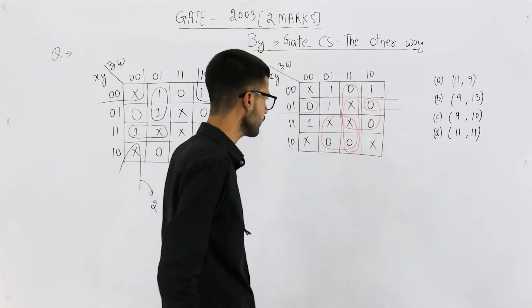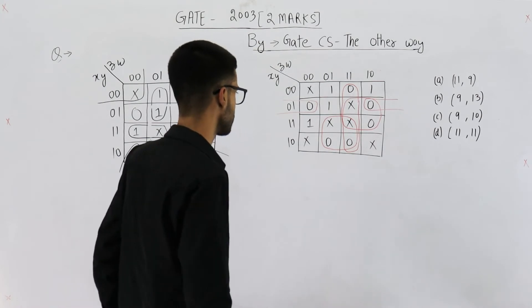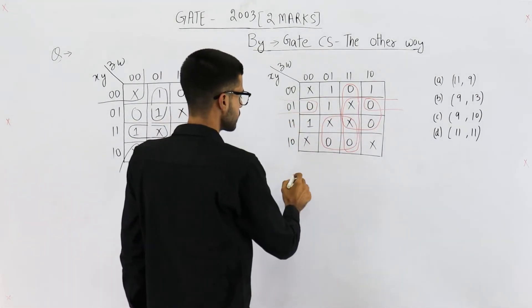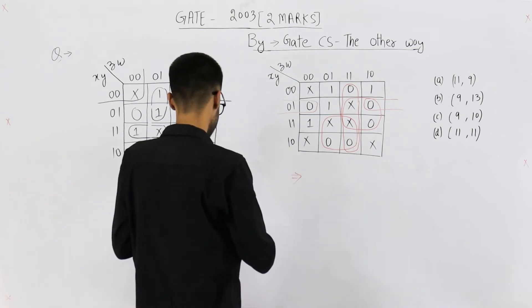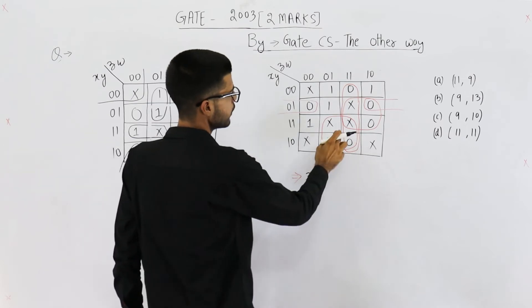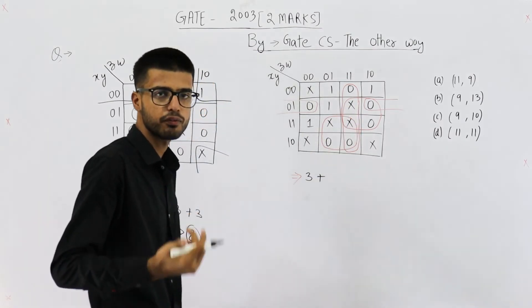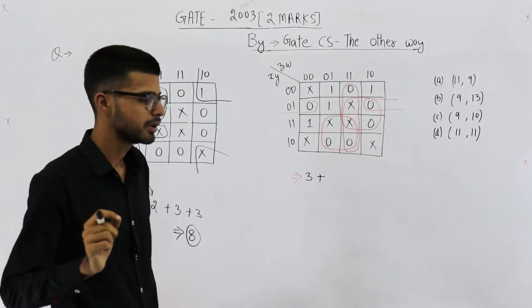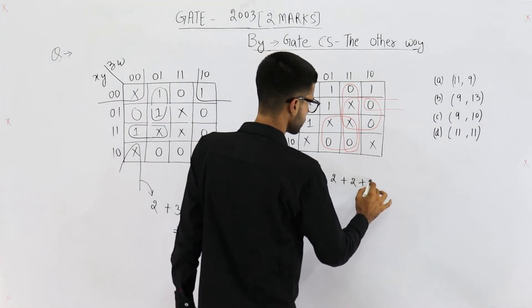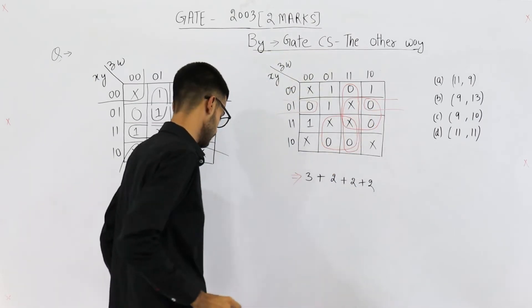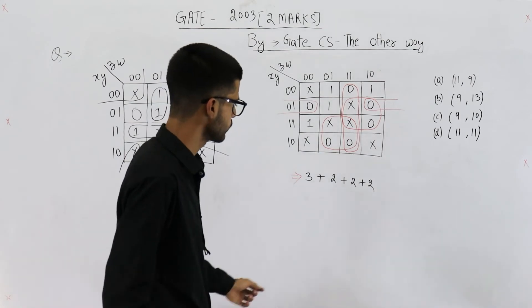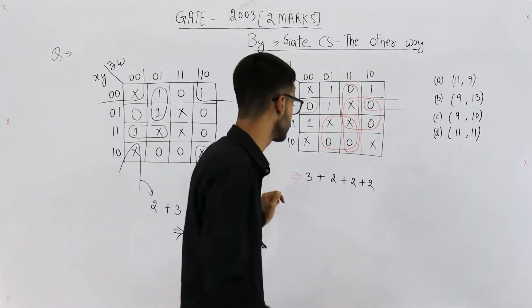Now, let's write down the literal count for this one. This is a group of two. Group of two means you will be having three literals. Three literals. And these three are group of fours. Group of fours means you will be having two literals only. So, two plus two plus two for these three groups or three prime implicants. So, this will be six plus three which is nine.